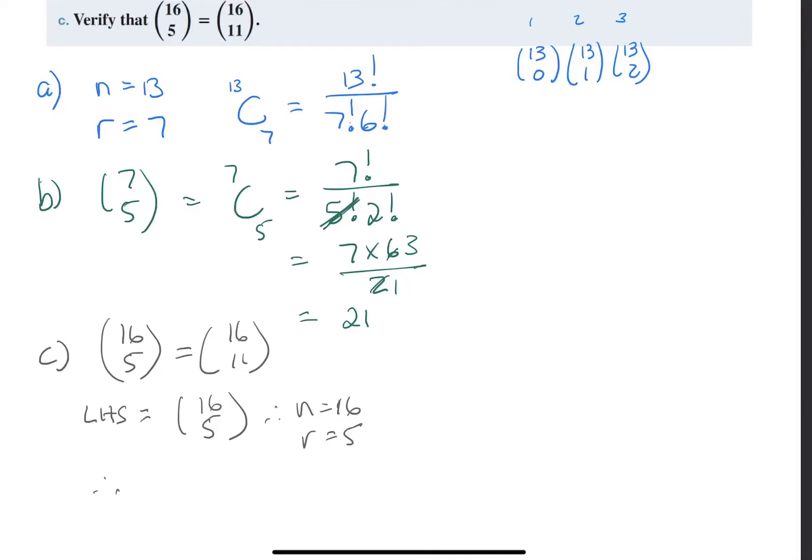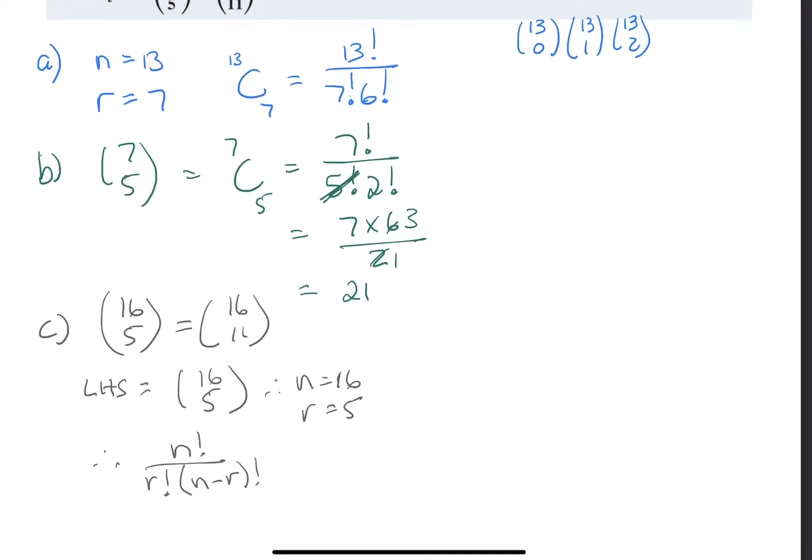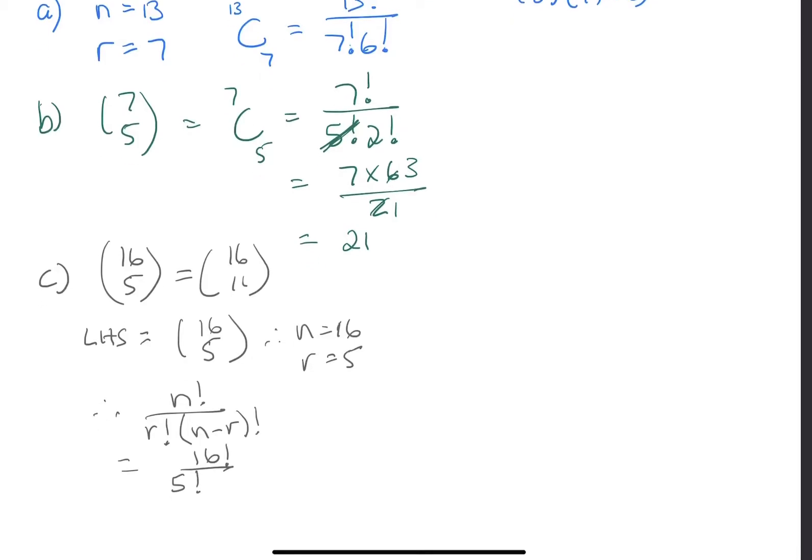Therefore, I have n factorial divided by r factorial, multiply by n take away r factorial, that equals sixteen take away five, and five factorial. This is sixteen factorial, this will be five factorial multiplied by eleven factorial.